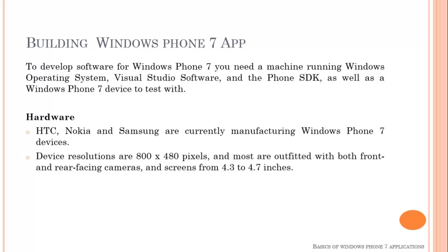The Phone SDK includes emulators, the Silverlight framework, as well as a Windows Phone 7 device to test with, where you can test your applications after building. Next is hardware. For building the Windows phone application, the hardware must support Windows phone — it can be HTC, Nokia, or Samsung, as they are currently manufacturing Windows phone devices. Device resolution can be 800 x 480 pixels, and most are outfitted with both front and rear facing cameras. The screen can be 4.3 to 4.7 inches.